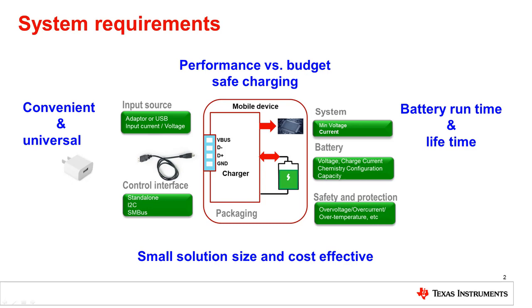What happens if the power required by the system and the power required to simultaneously charge the battery is larger than what the adapter is able to provide? If the charger were to supply both the system and battery charging at full rate, it would overload the adapter, which might crash. What we want is for the charger to scale back the battery charging rate when this occurs so that the adapter isn't overloaded.